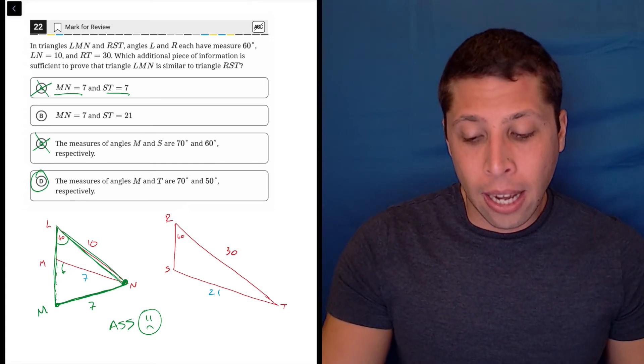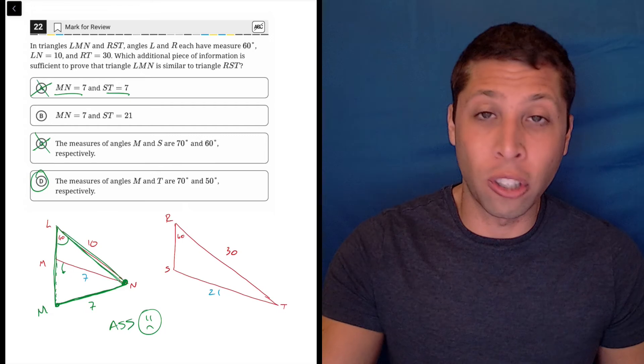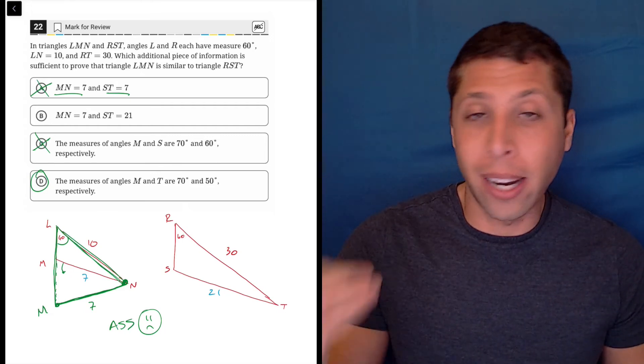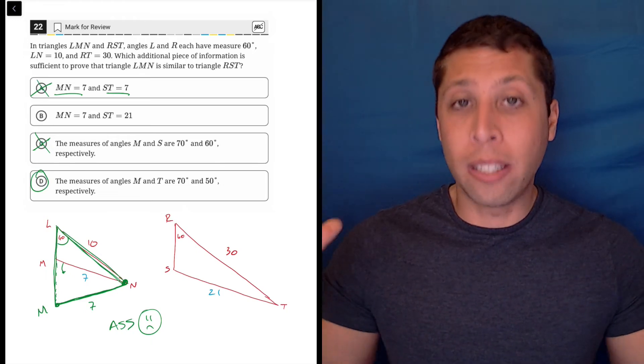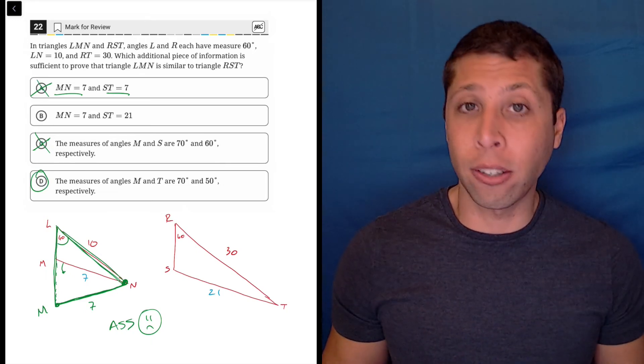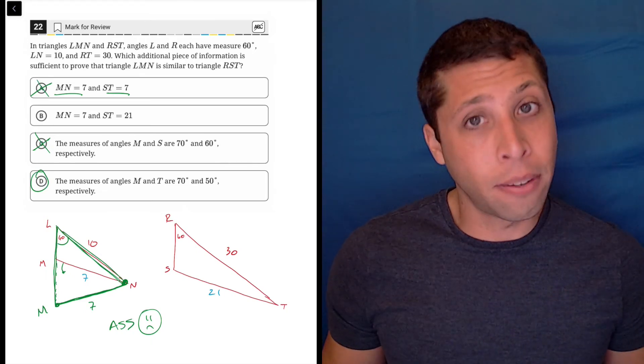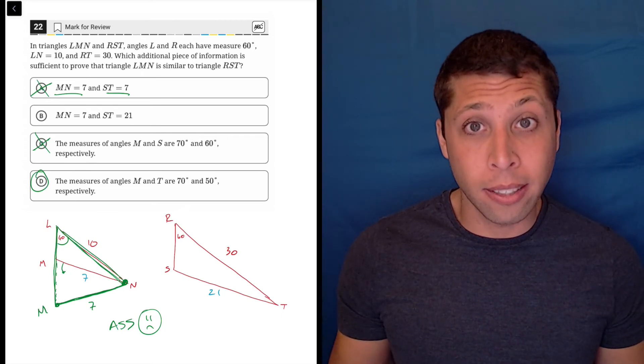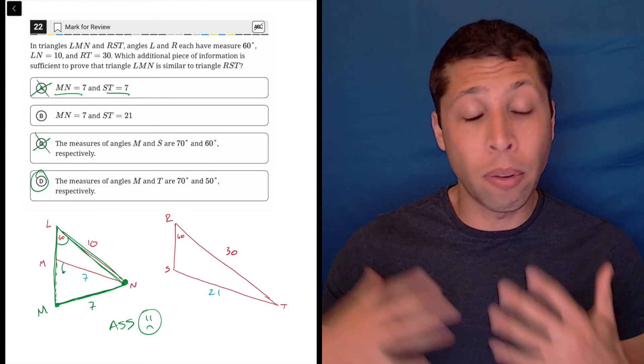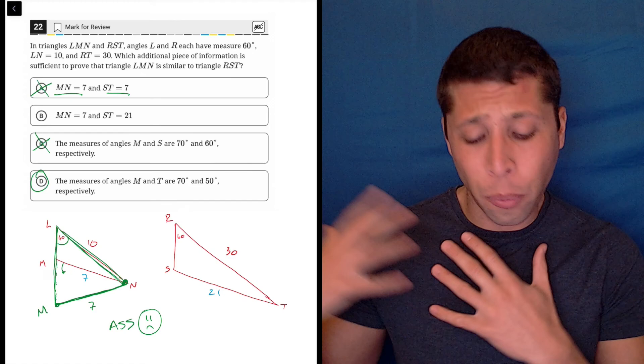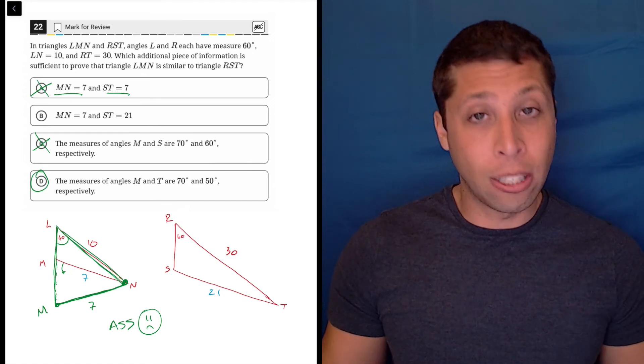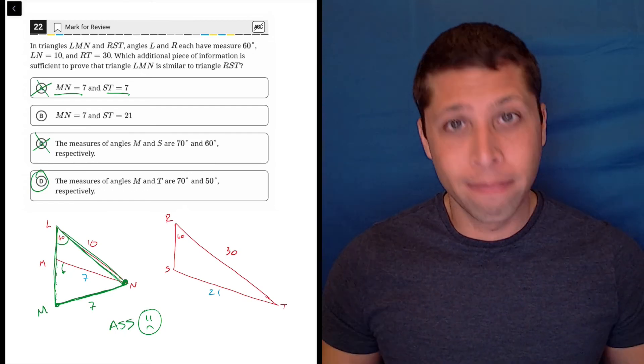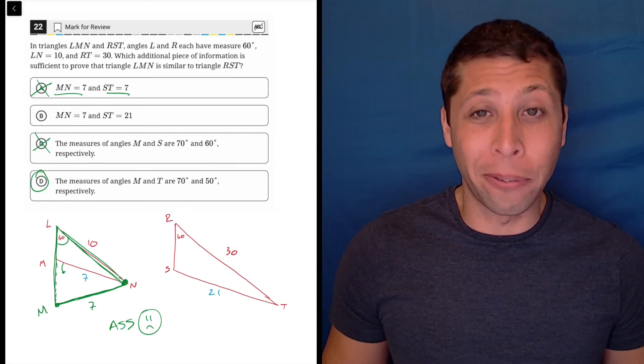But like I said, the short version is that the thing to memorize for similar triangles is the angles are consistent. D would tell us, choice D would tell us the angles are consistent. That's enough for us to just pick it and trust that our memory is good, that we've understood the concept, and that for whatever reason, B doesn't really match with that. It's tricky, but it's hopefully gettable for the last question.